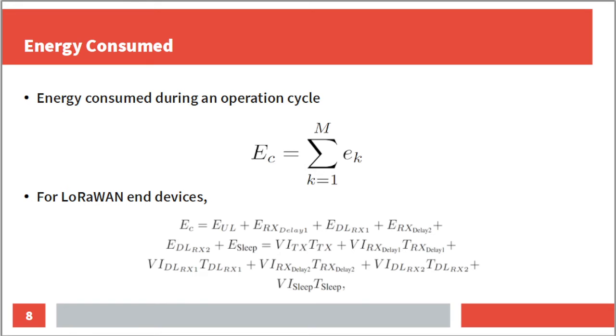For LoRaWAN end devices, for example, the energy consumed during an operation cycle is given by the energy spent in the uplink transmission, the delay 1 receive window, the downlink reception in RX1 window, the delay 2 receive window, the downlink reception in RX2 window, and the sleep mode until the next uplink transmission.